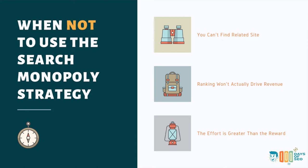When not to use the search monopoly strategy: if you cannot find a related website that is more authoritative than you, this is not a good strategy to use. Also, if ranking for this is going to give you vanity but will not drive revenue — the link matters, but also the branding and the awareness matter. If this is something that won't drive revenue, for example if I was Ahrefs — one of the sponsors of 100 Days of SEO — ranking number one for SEO might drive revenue, but it's not really a direct path.